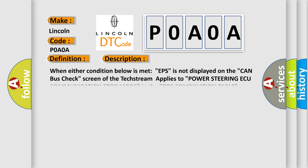When either condition below is met: EPS is not displayed on the CAN bus check screen of the tech stream, applies to Power Steering communication stop mode in the DTC combination table.